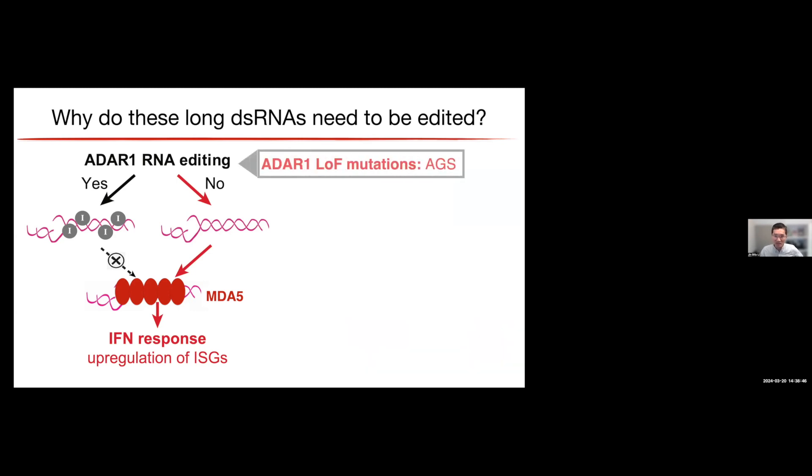So that was mouse genetics. For human genetics, it's also very interesting that people have identified in some very rare autoimmune diseases, such as something called Aicardi-Goutières syndrome or AGS, ADAR1 loss-of-function mutations. In the same type of disease, which is a monogenic disease, people also found MDA5 gain-of-function mutations in different patients. So that totally makes sense, echoing the mechanism we and others uncovered. So either way, ADAR1 loss-of-function or MDA5 gain-of-functions, these would really elevate an interferon response.